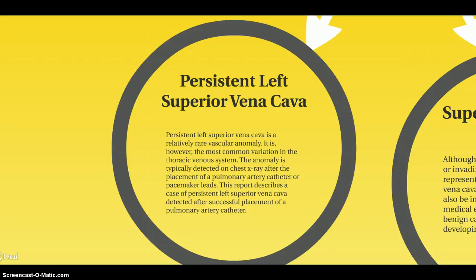Persistent left superior vena cava is a relatively rare vascular anomaly. It is, however, the most common variation in the thoracic venous system and is typically detected on chest x-ray after the placement of a pulmonary artery catheter or pacemaker leads. This report describes a case of persistent left superior vena cava detected after successful replacement of a pulmonary artery catheter.